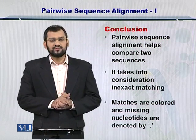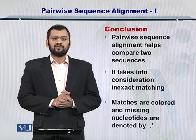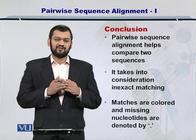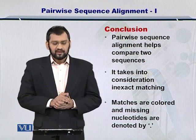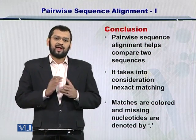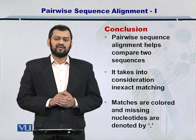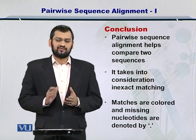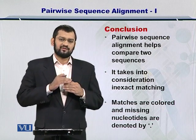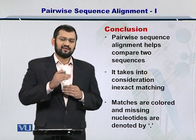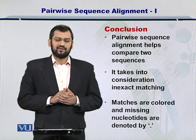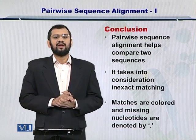In conclusion, pairwise sequence alignment allows you to compare two sequences against each other, and it is an inexact matching process. As you just saw in the second example, if some amino acids or nucleotides are not present in the other sequence, you represent them by placing a dot, and this is called a gap.